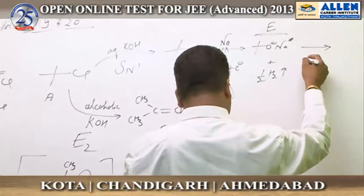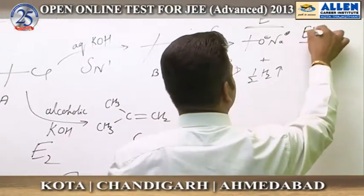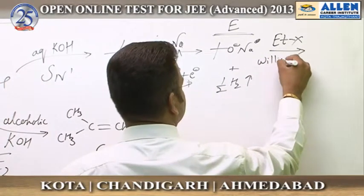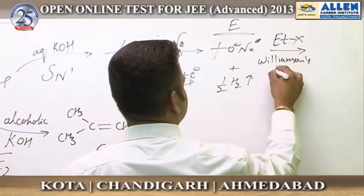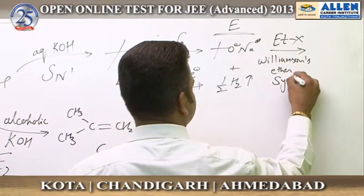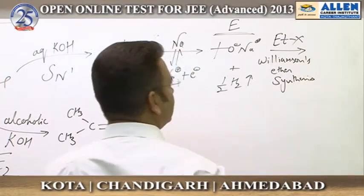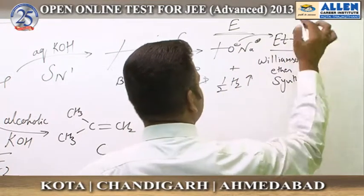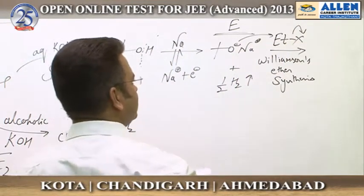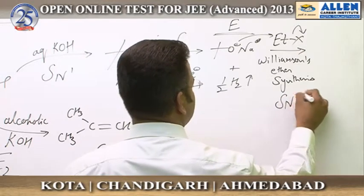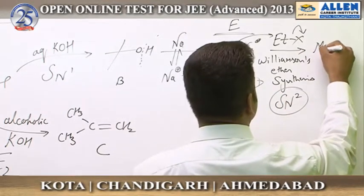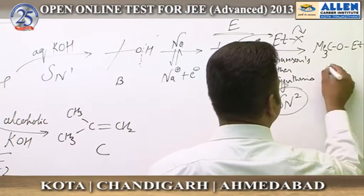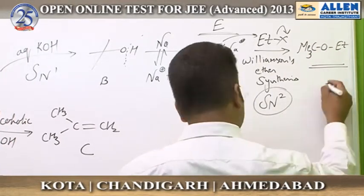With E, if you carry out the reaction with EtX, this is Williamson's ether synthesis. The O⁻ will attack on EtX and will expel X⁻ out. The mechanism is SN2 for this, and your product is (CH₃)₃C–O–Et. This is your F.